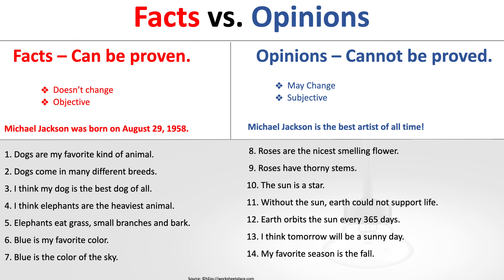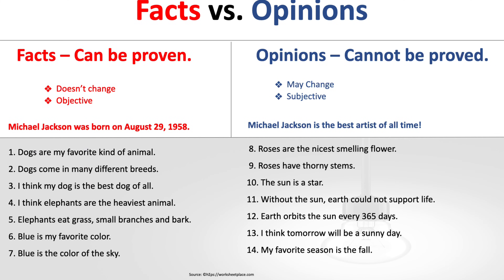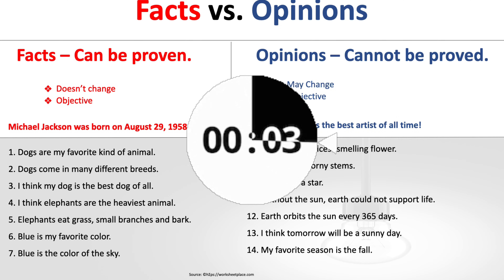Facts vs. Opinions. On the HESI, you will be asked to identify what is a fact or opinion in a paragraph. Facts can be proven, they do not change, and they are objective. An example: Michael Jackson was born on August 29, 1958. Opinions cannot be proven, they can change, and they are subjective. An example: Michael Jackson is the best artist of all time. Go ahead and pause the video here, and in three seconds all of the answers will be revealed.